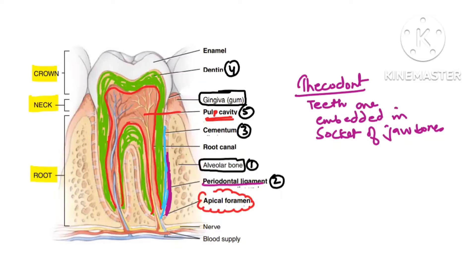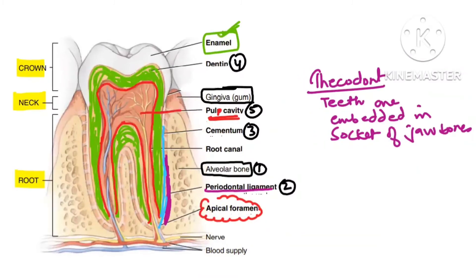The gums surround the dentine only in the neck area. In the crown area, the dentine is covered by a hard substance known as enamel. Enamel is the hard substance covering the exposed part of the tooth. So the diagram of the tooth should now be clear.